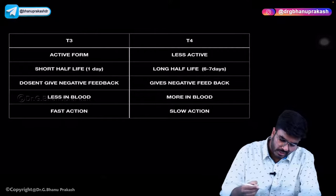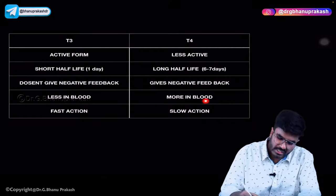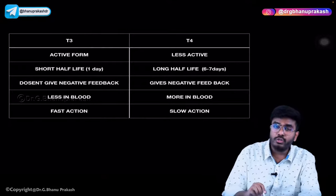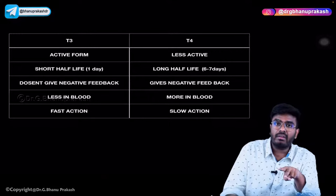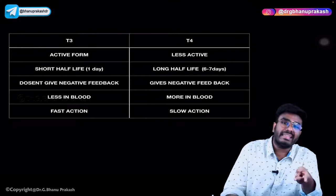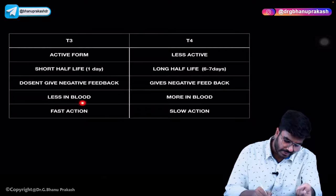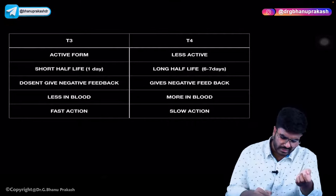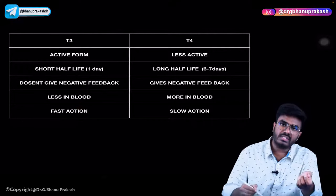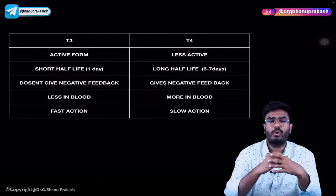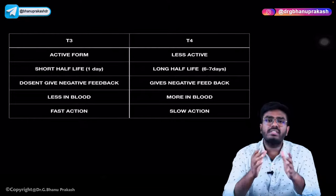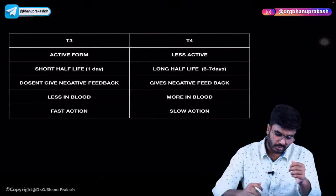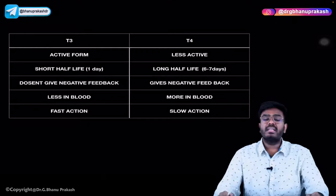T4 is more present in blood. In peripheral tissues, whenever needed, T4 is converted into T3. T3 has faster action and T4 has slower action. These are the important differences between T3 and T4. In the next video we'll discuss the effects of thyroid hormones on body functions, metabolism, and thyroid drugs for treating hyperthyroidism and hypothyroidism.